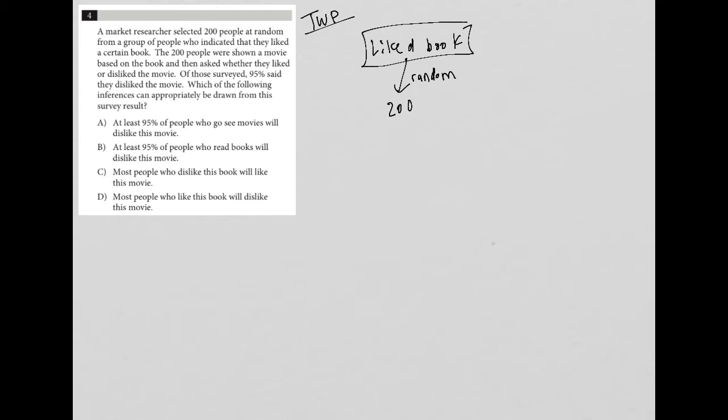The next sentence says the 200 people were shown a movie based on the book and then asked whether they liked or disliked the movie. So these 200 people were shown a movie, and then of course you have some people who liked the movie and some people who disliked.